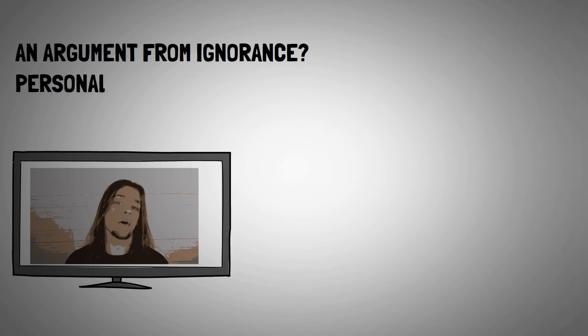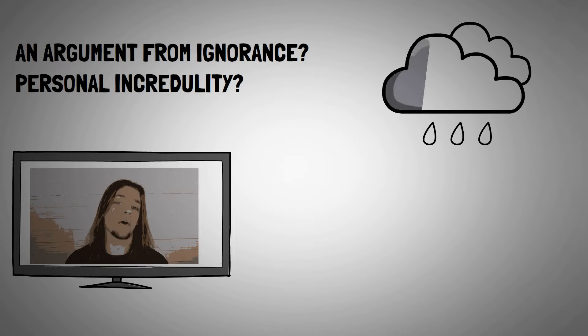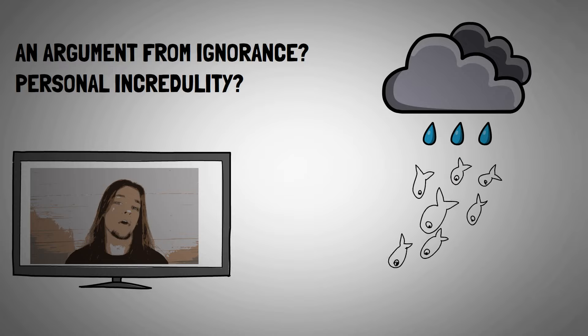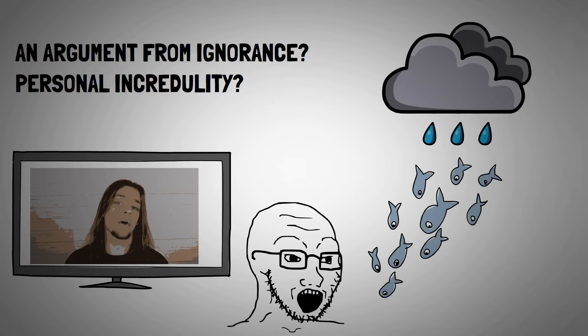With this acknowledged, the second and perhaps most obvious flaw with miracles is that they either commit an argument from ignorance or a personal incredulity fallacy. To illustrate this, consider the following. Throughout history, there have been numerous accounts of flightless animals raining from the sky. And needless to say, on just about every occasion, someone somewhere has asserted that a miracle has occurred because there's no other explanation.